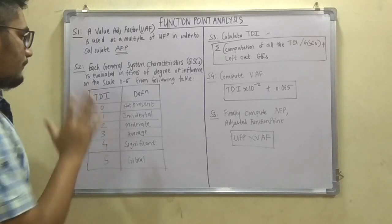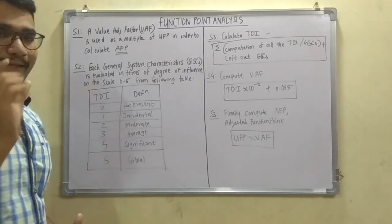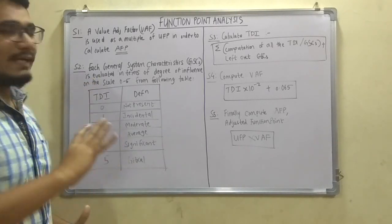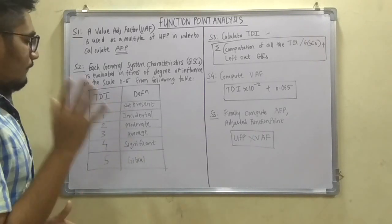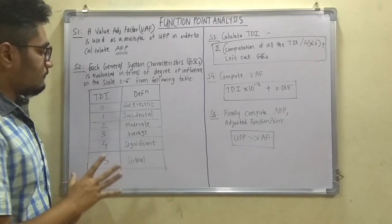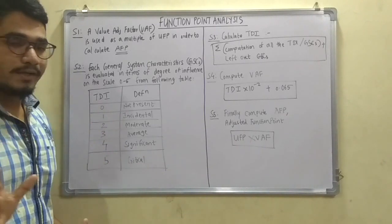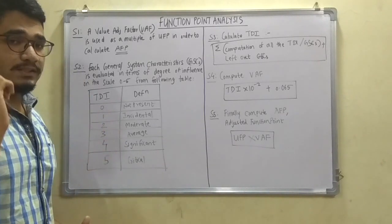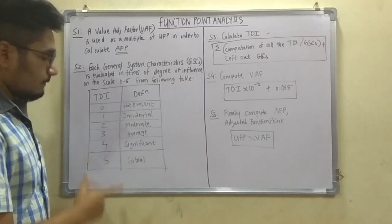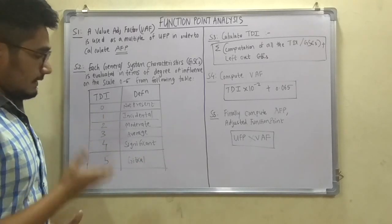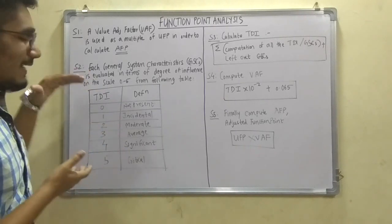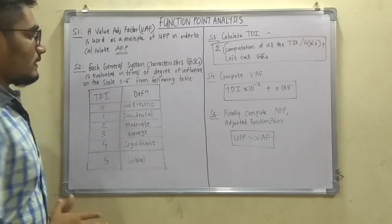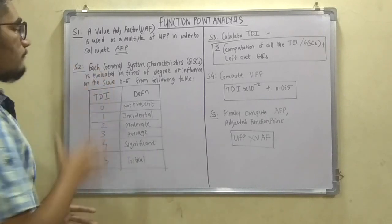So this TDI says that when the TDI is 0 that means that influence is not present at all, when it is 1 it is incidental influence, when it is 2 it is moderate influence, when it is 3 it is average influence, when it is 4 it is significant, and when it is 5 it is critical. So these are the 6 TDIs and their definitions which we get from step 2.